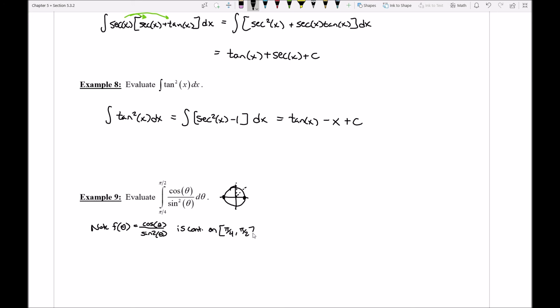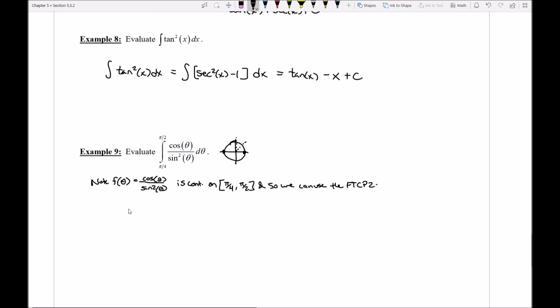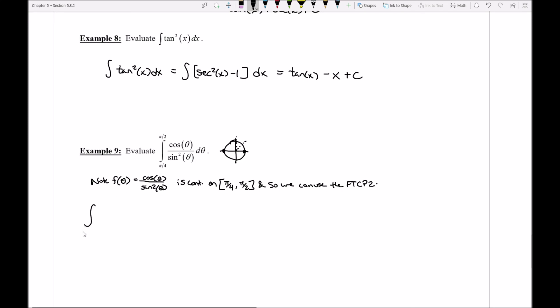So I can definitely say that this here is going to be continuous on the interval from pi over 4 to pi over 2, and so we can use the fundamental theorem of calculus part 2, or I guess we never really put the O in there before but we just said FTC P2. Okay, so since we can go ahead and do that, let's go ahead and start to try to write out our integral here to see how we would actually begin to work with this because it is a little bit messy.